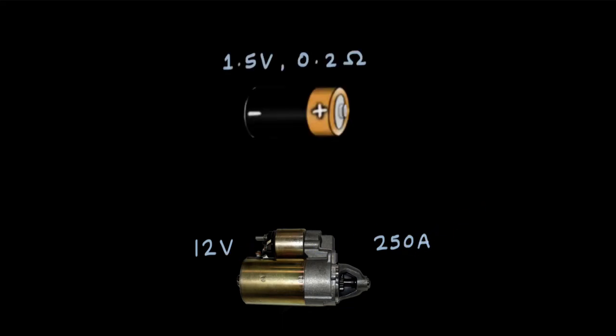And double A batteries are usually rated at 1.5 volts and they have an internal resistance of again on average 0.2 ohms. If you want to start a car using these, we would need a bunch of them.